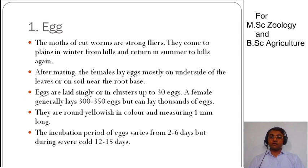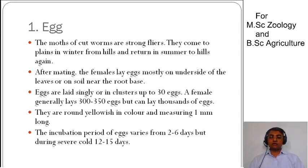After mating, eggs are laid in a cluster of about 30 eggs. A female generally lays 300 to 350 eggs, which is the common range, but a female can lay thousands of eggs in her lifetime. These eggs are about 1 mm long and the general incubation period is 6 days, though this varies with temperature.